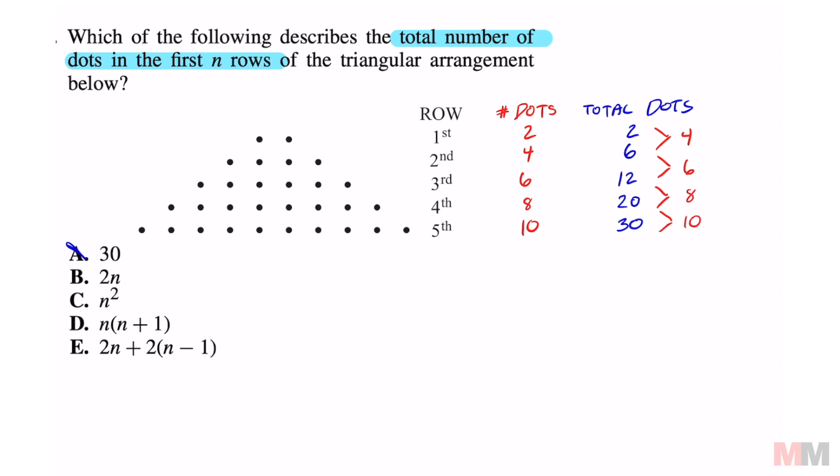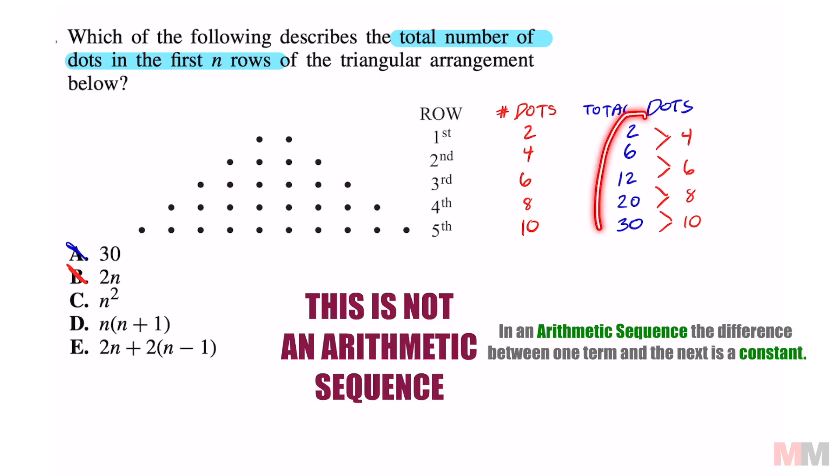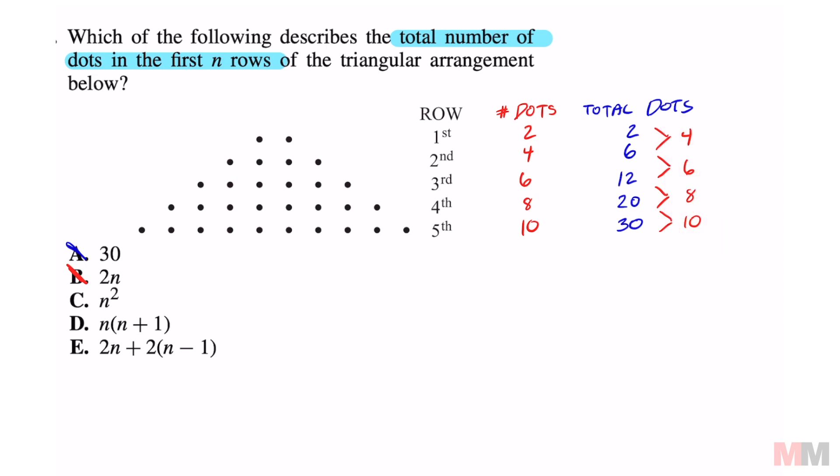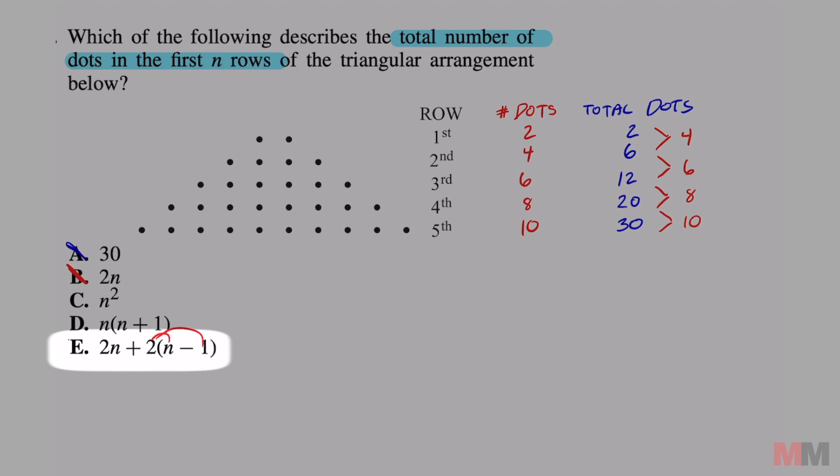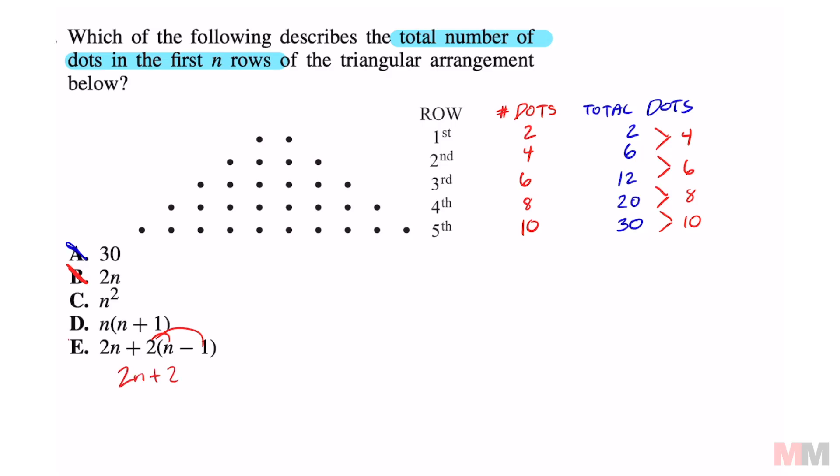That tells you B is wrong because this sequence is not arithmetic, meaning we are not adding the same number after every term. Looking at letter choice E, if you simplify that, that's going to be 2n + 2n - 2, which gets you 4n - 2. That is also arithmetic, so that's wrong.